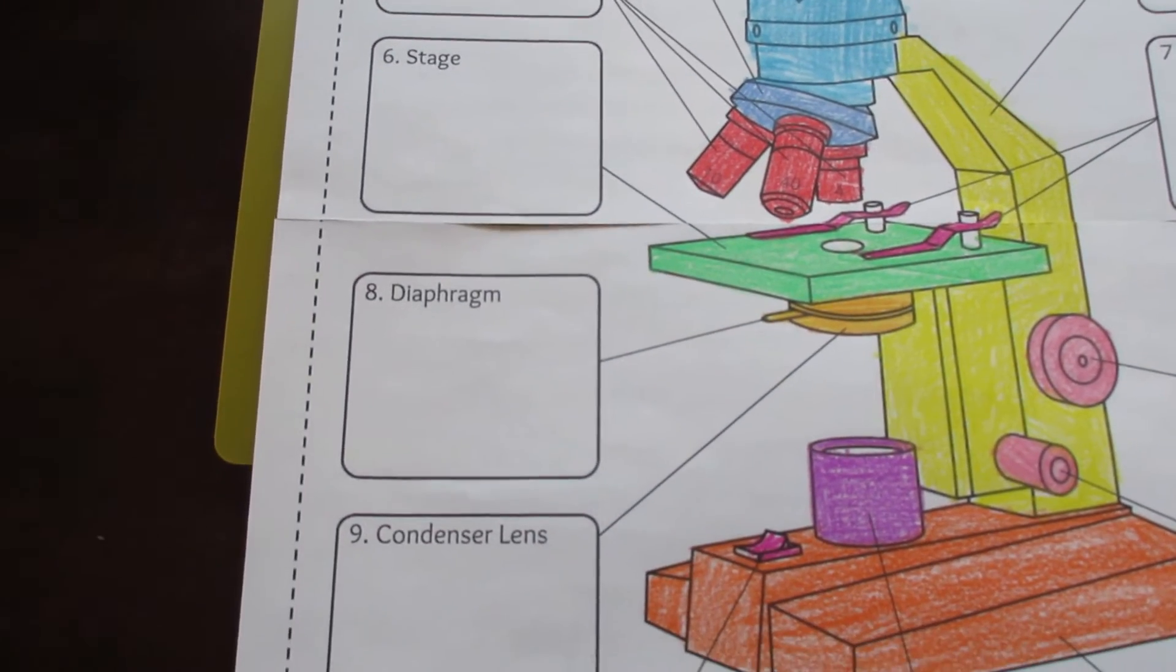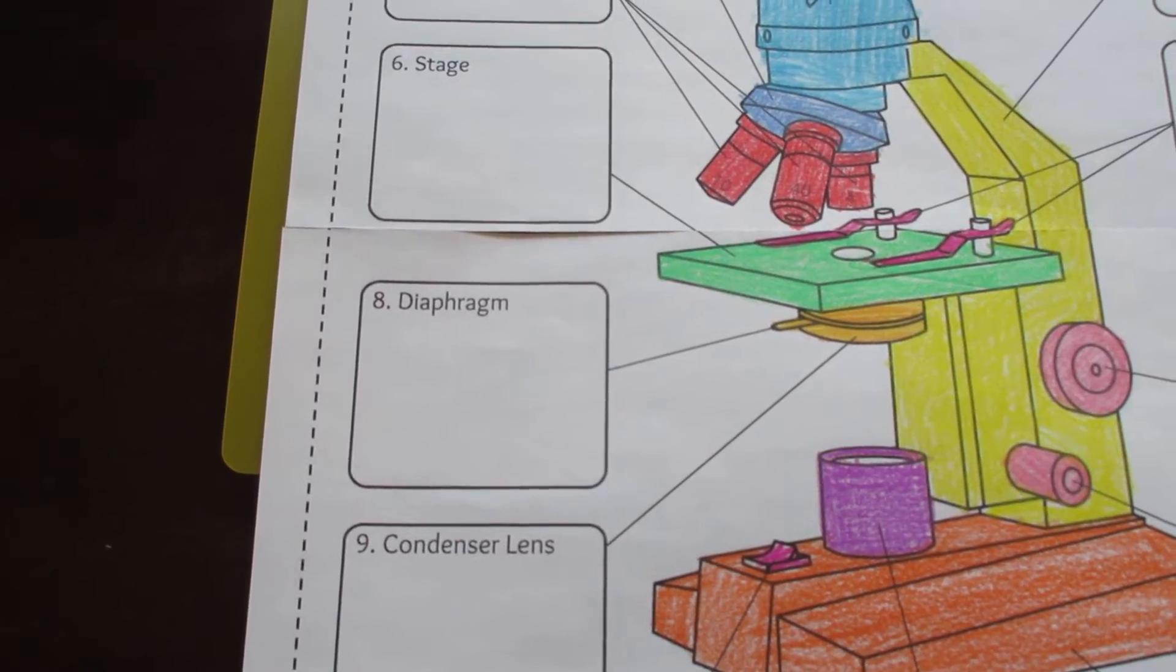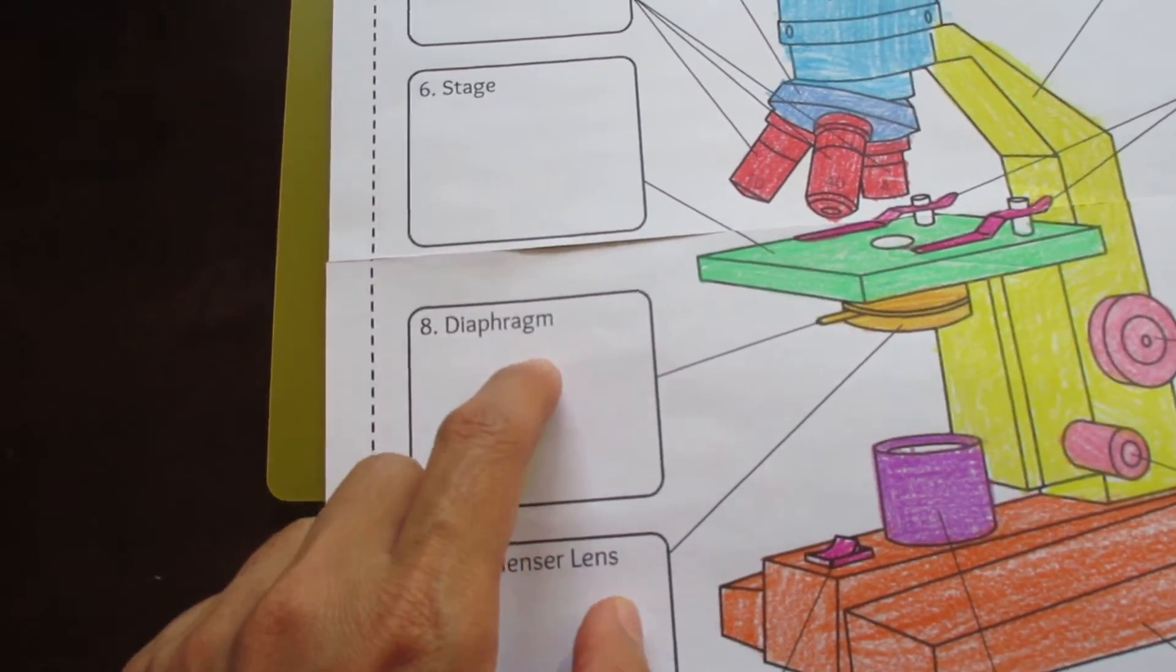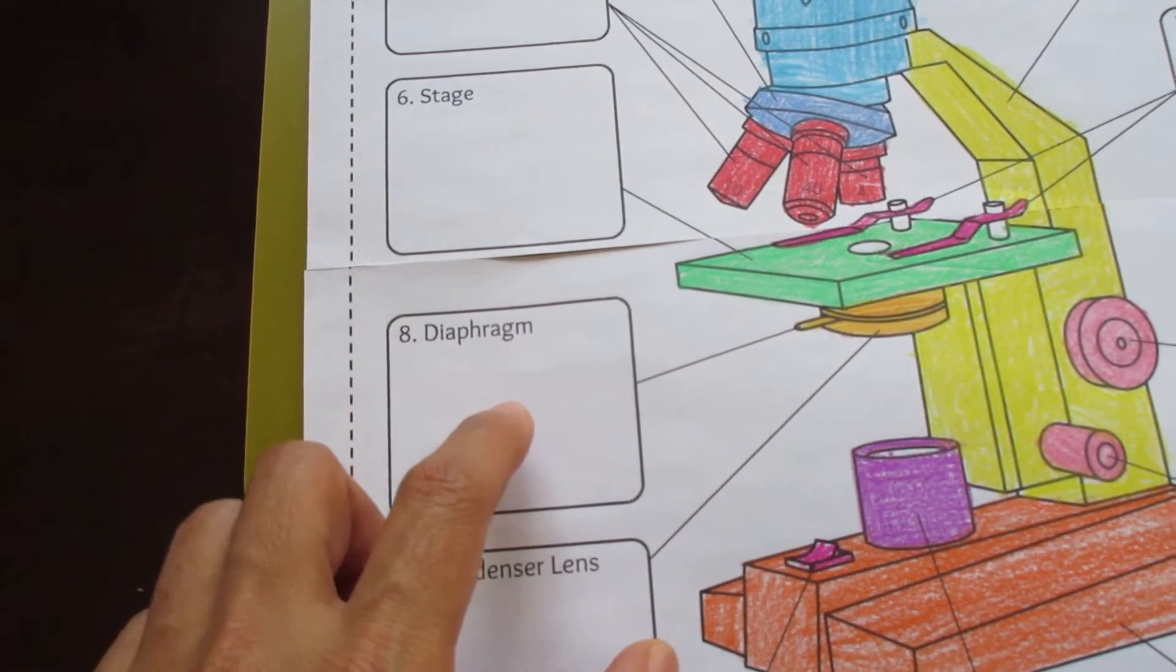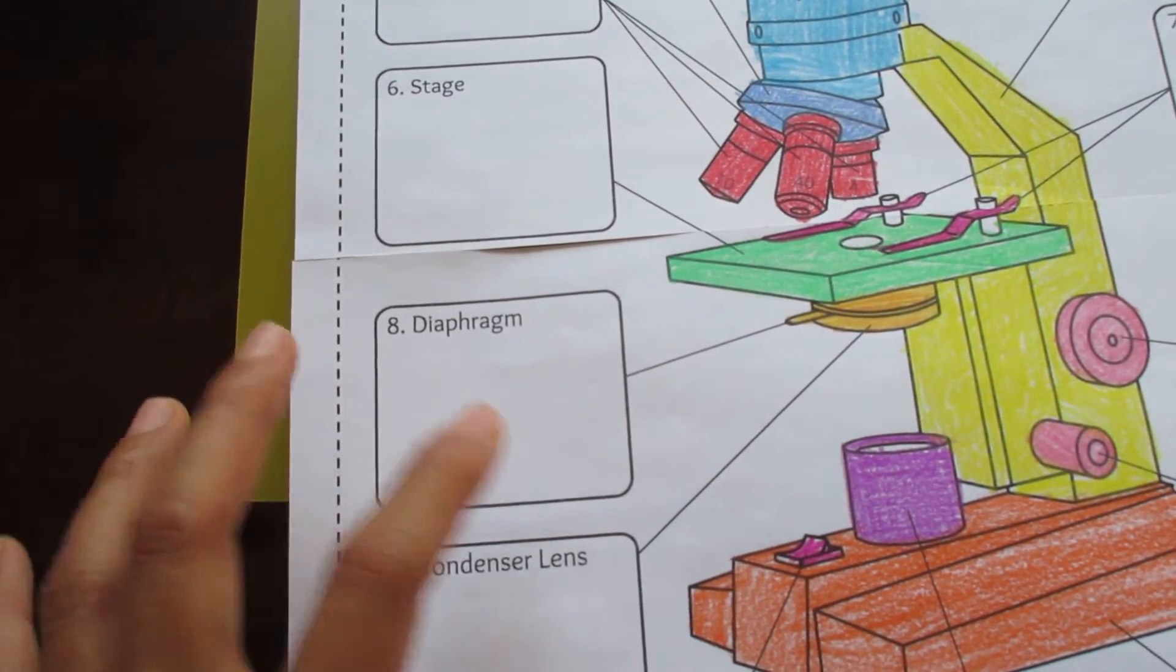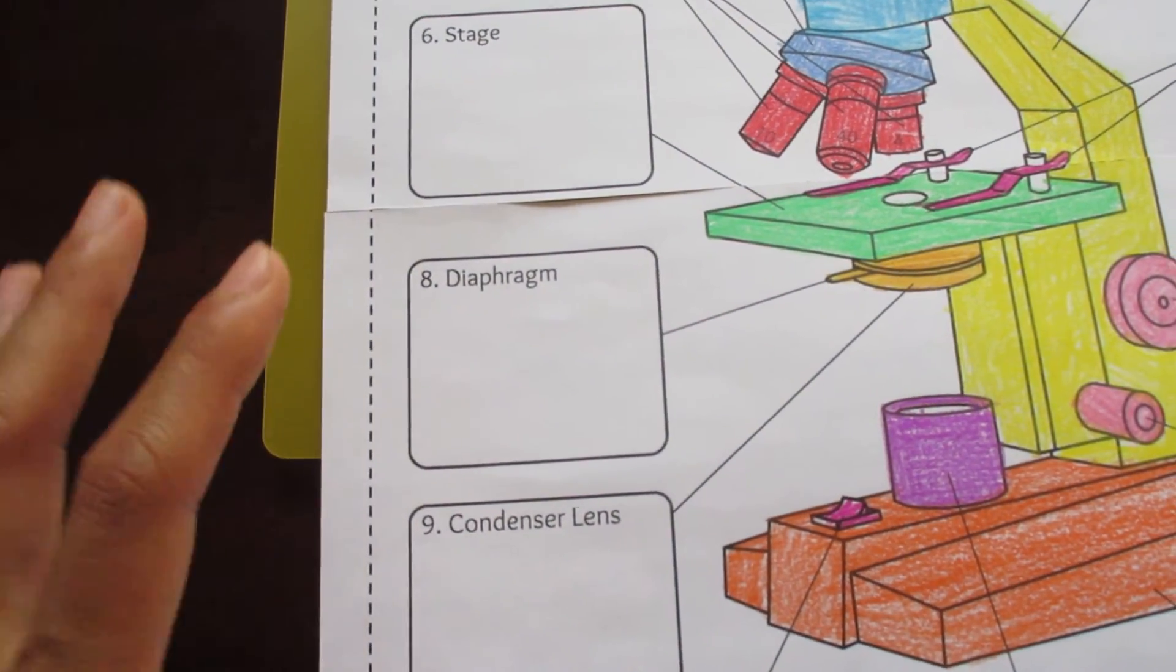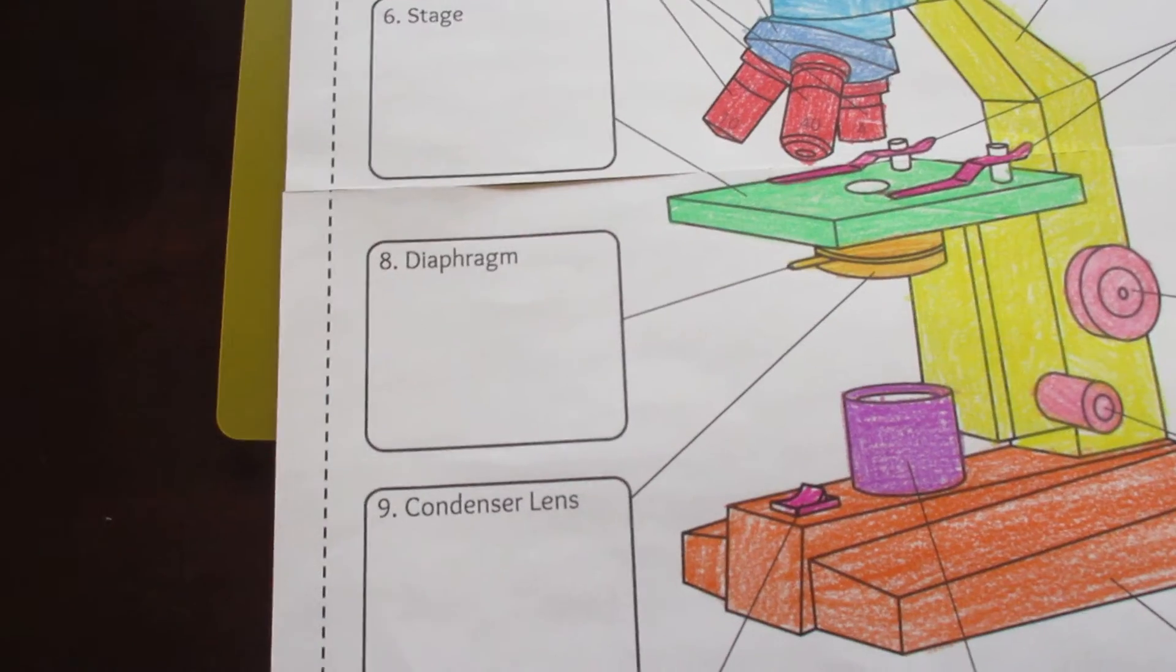Another one of the options I provide looks similar to this but the labels are replaced by blanks. This is a more advanced option for students for whom you might want to ask questions like, structure number eight, does anybody know the name of that? This way you can increase participation in your class.